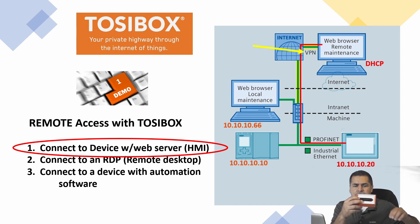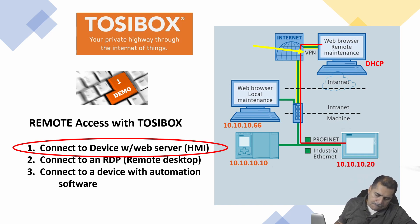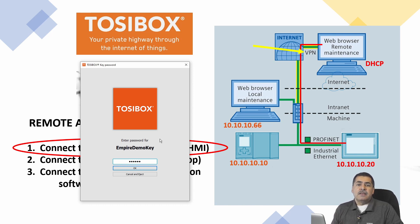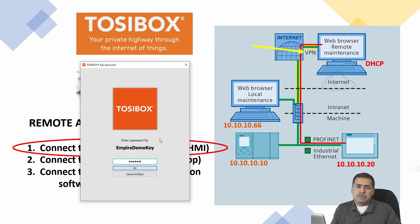This is my TosiBox key — this is what it looks like. I'll plug it into an available USB port. Once plugged in, I get a prompt for a password. Let me talk about two-factor authentication — it's a great extra layer of protection. Just like logging into an email account requires a password plus a texted code, with TosiBox you need both the physical key and a password. Two steps of authentication.